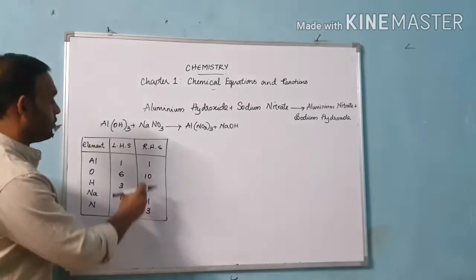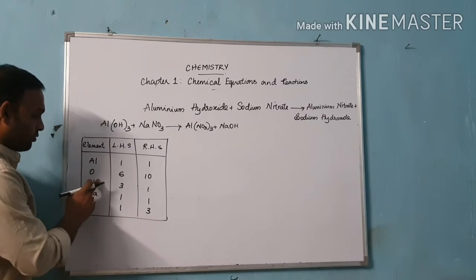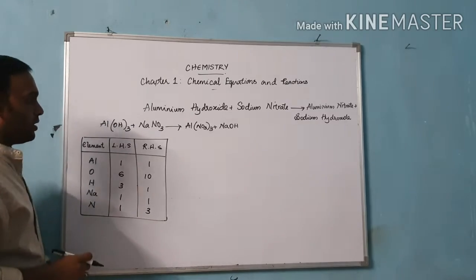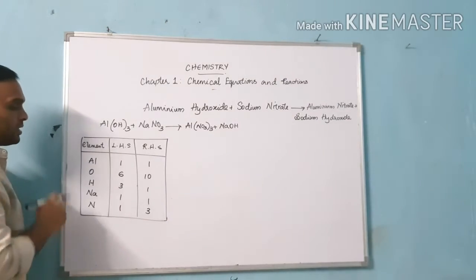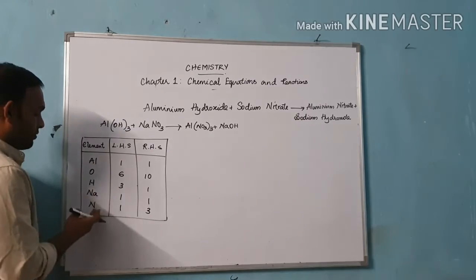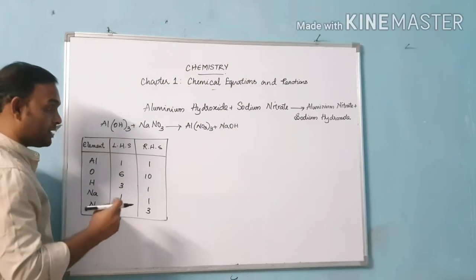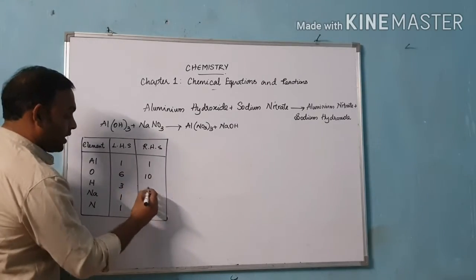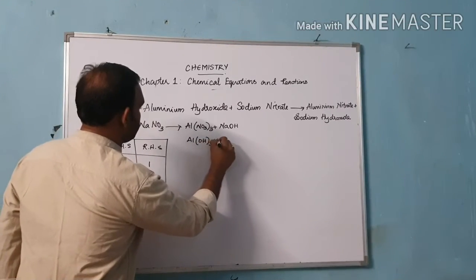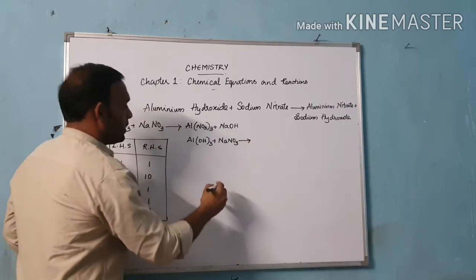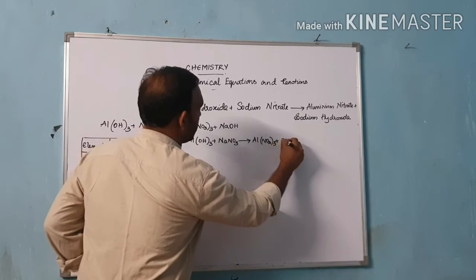From this tabulation column, it is clear that oxygen, hydrogen, and nitrogen are not balanced. We have only 2 balanced elements: aluminium and sodium. Now we will try to balance either hydrogen or nitrogen. To balance hydrogen, we multiply a coefficient of 3 on the RHS side before NaOH. So the equation becomes: Al(OH)₃ + NaNO₃ → Al(NO₃)₃ + 3NaOH.